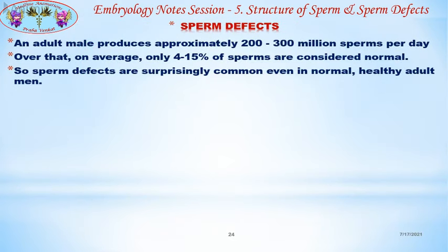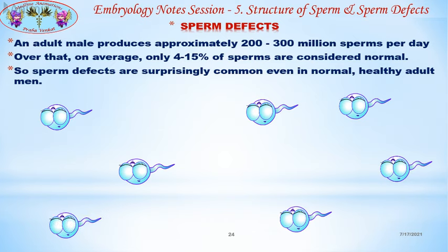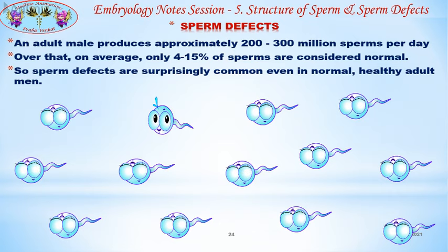Now let's see sperm defects. An adult male produces approximately 200 to 300 million sperms per day, yet on average only 4 to 15 percent of sperms are considered normal — so sperm defects are surprisingly common even in normal healthy adult men. There are different types of sperm defects; they may either affect the motility or morphology of the sperms, thereby affecting fertilizing capability. We will focus on defects with abnormal morphology, otherwise called teratozoospermia.